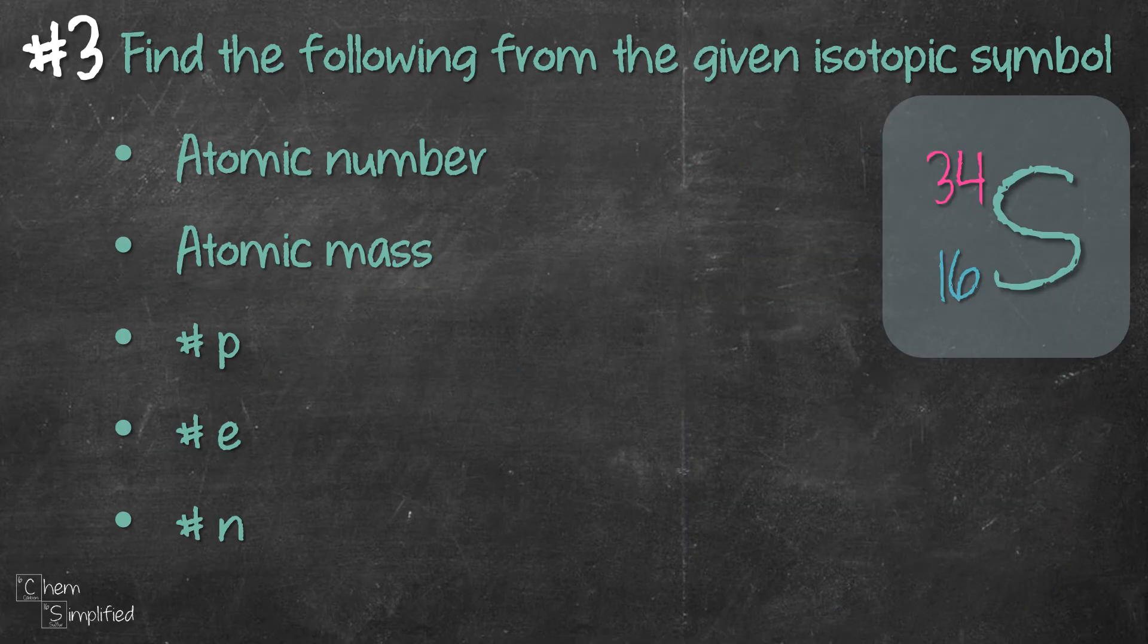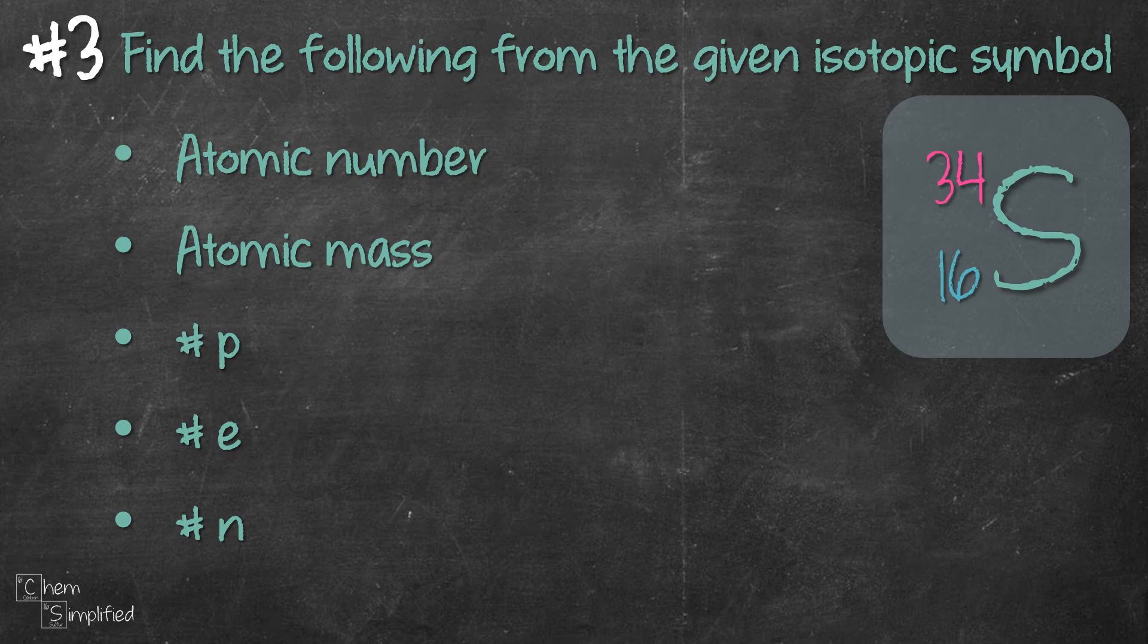Now let's do this the other way around. What if we get an isotopic symbol and we're asked to find the following. Atomic number. Well, that's written on the bottom left, right? So that means that 16.